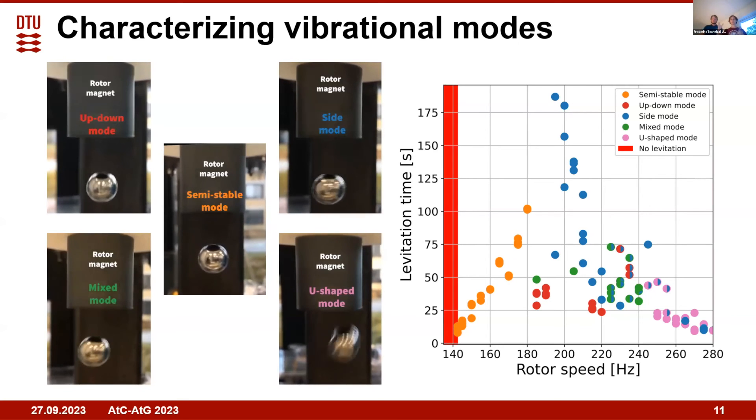Let's say we keep this magnet constant with the same size and we just change the rotor speed. What happens is then at low speeds no modes will occur and it will just float. But once you hit a resonance at a bit higher speed, you start to see this up-down mode appearing. Then at even higher speeds you will start to see this side mode, which we've also seen in simulations.